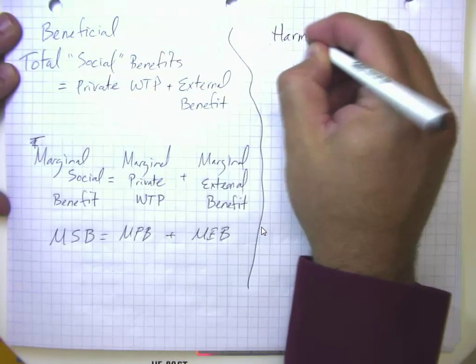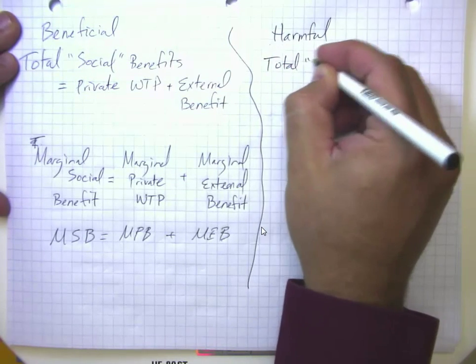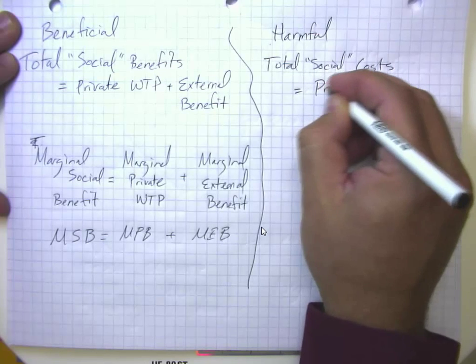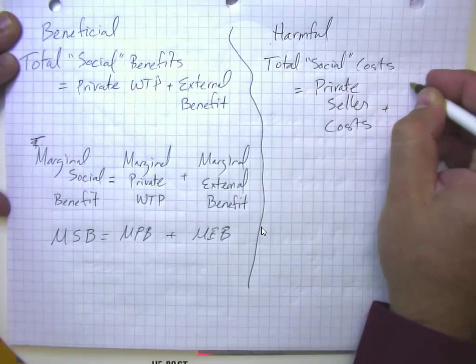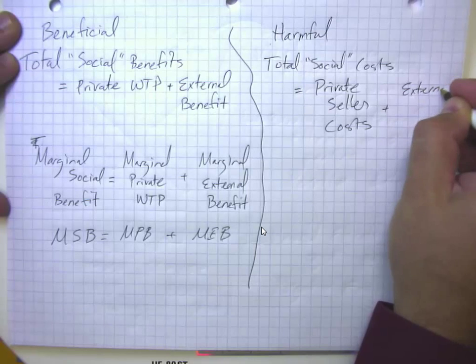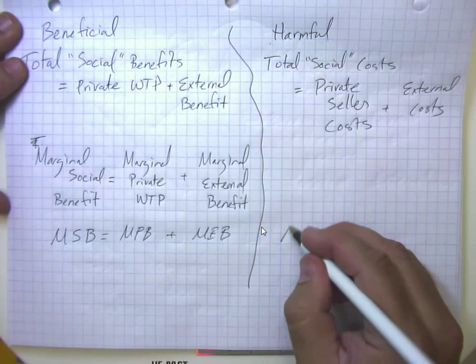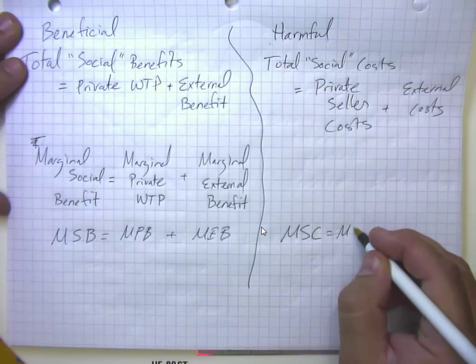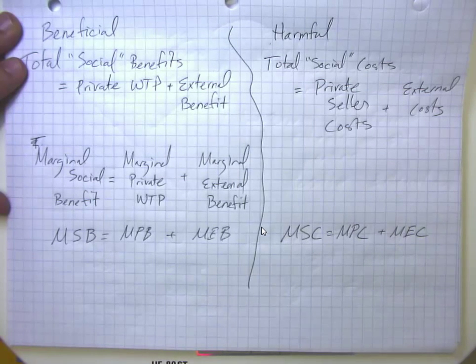What if we have harmful or negative externalities? Then in this case, the total or social costs are equal to the private seller costs plus the external costs on third parties. And again, we can think of a marginal version of this, so the marginal social cost is going to be equal to the marginal seller cost or private cost, plus the marginal external cost.